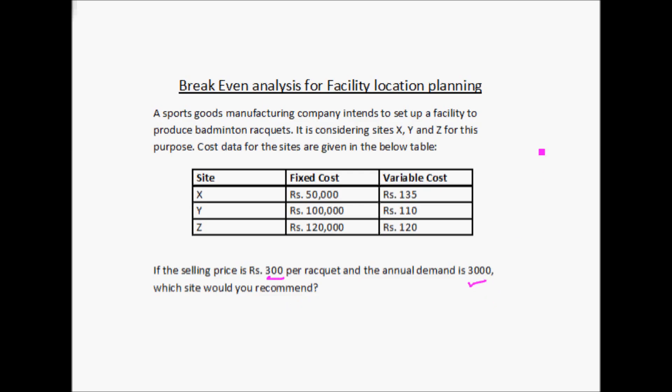So here we have the unit selling price and the total number of rackets to be produced, so we can find out the total selling price. We also have the fixed cost and the unit variable cost for each of the sites, so we can find out the cost of producing 3000 units at each of these sites.